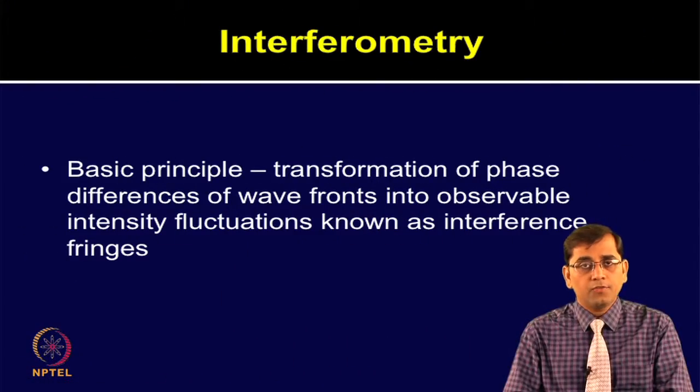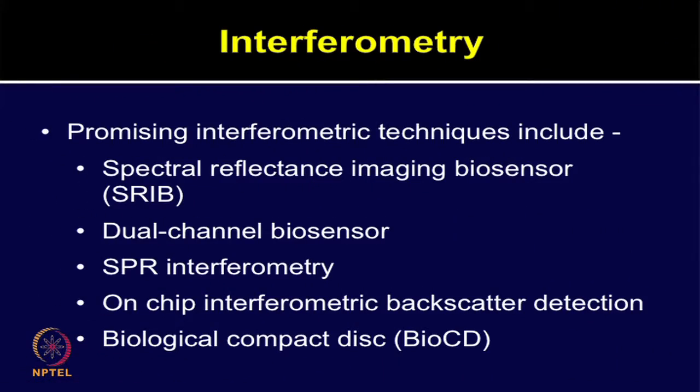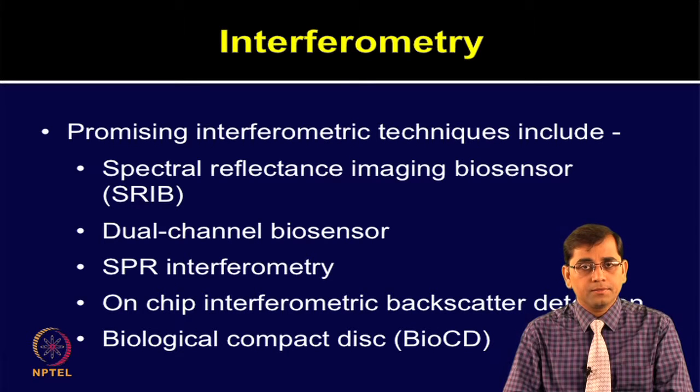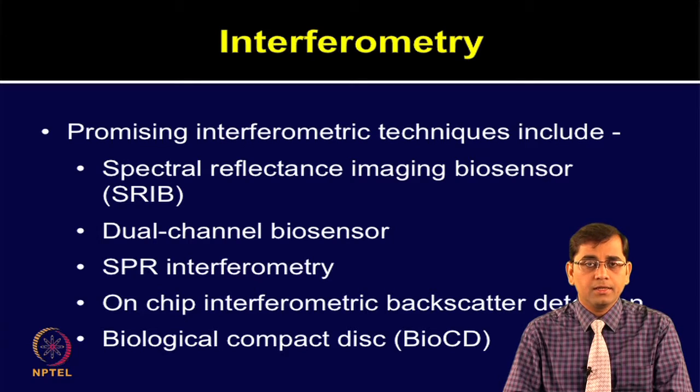Having discussed SPR, imaging-based, and ellipsometry-based techniques, we will now talk about interference-based techniques. Interference-based detection techniques are a powerful tool for biochemical and functional analysis of proteins. The basic principle is the transformation of phase differences of wave fronts into observable intensity fluctuations, known as interference fringes. Promising interferometry techniques include spectral reflectance imaging biosensor (SRIB), dual channel biosensor, SPR interferometry, on-chip interferometry, back-scatter detection, and biological compact disc, among others.